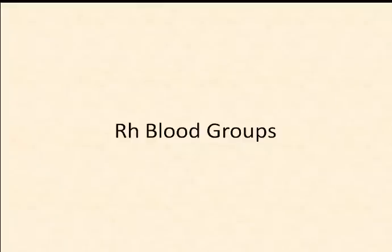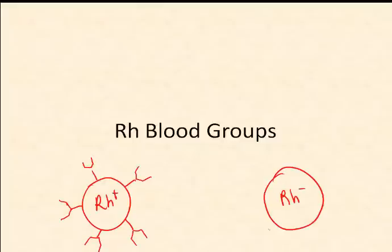Another important blood group to consider is the RH blood group. RH factor becomes an important factor during pregnancy. If someone is RH positive, they contain a particular antigen on the surface of their red blood cells. If someone is RH negative, their red blood cells do not have the RH antigen. When people are born under normal circumstances, if they are RH positive they have no antibodies against the RH antigen — this makes sense, as we wouldn't want them attacking their own blood. People who are RH negative don't have anti-RH positive antibodies either. It actually requires exposure to the RH antigen for antibodies to be made by the immune system in RH negative individuals.